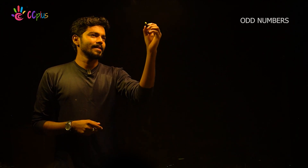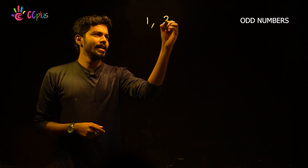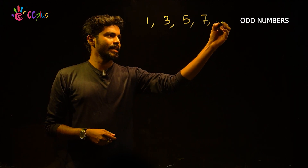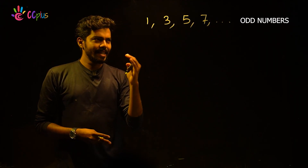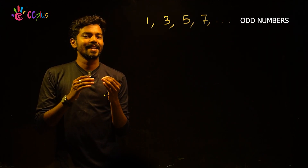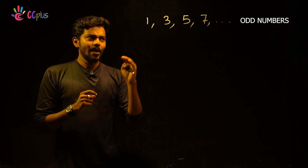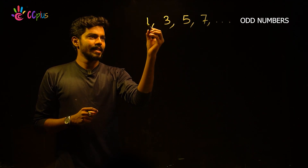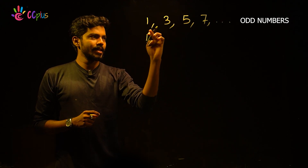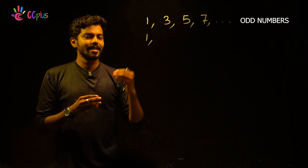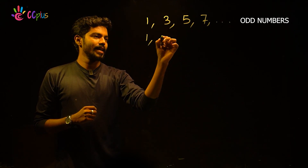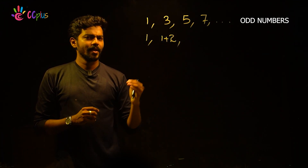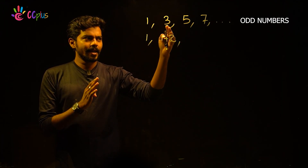What are odd numbers? Odd numbers are 1, 3, 5, 7, and so on. These are odd numbers. In general, odd numbers differ by 2.